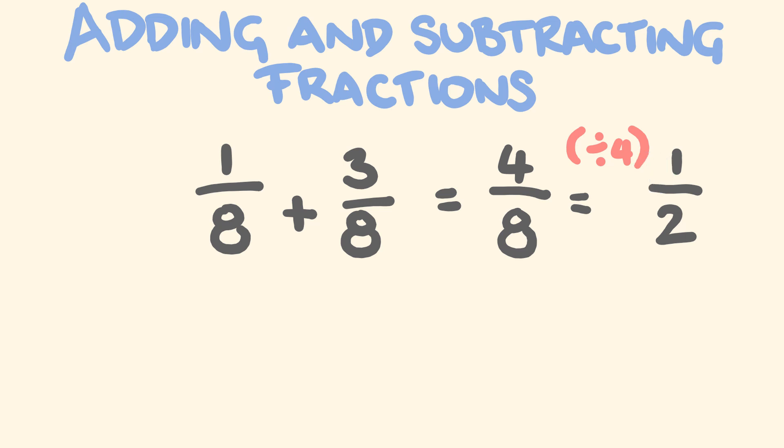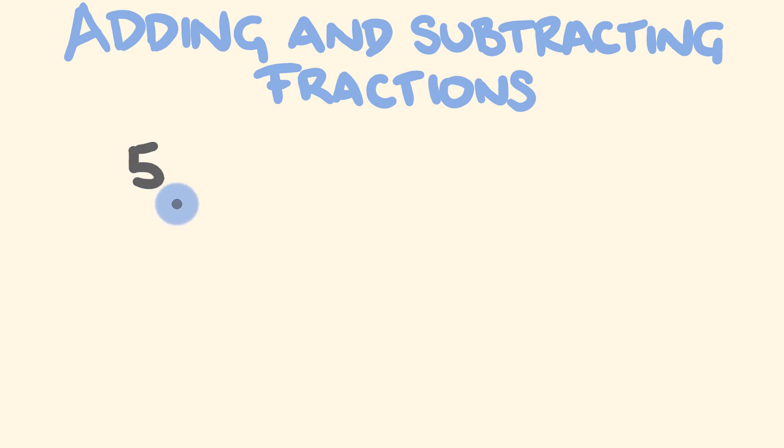So for our next example, let's do 5 over 7 and we're going to subtract 2 over 7. You're going to notice first off that our denominators are the same here once again. So what we can do is just directly subtract these top numbers, the numerators. So 5 take away 2 is equal to 3 and the denominator stays the same at 7. We can't simplify this any further, so this is our answer.